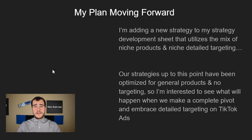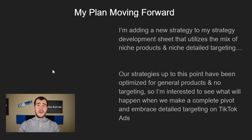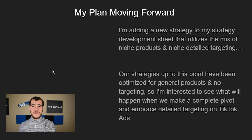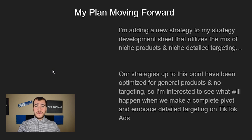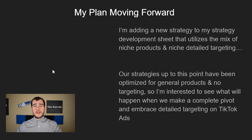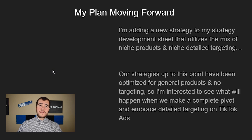I'm always testing new strategies and I always try to come on here and update you guys on the newest and best performing ones. I'm very interested to see what happens when we pivot our product research method around this. Up to this point we've been testing general products, and testing general products with specific niche targeting isn't going to be that different — which is probably why no targeting has worked so well. I'm excited to completely pivot our product research and targeting method, maybe switch some things up on the website, and run this as a proper test with 10 to 15 different products, different stores, and different ad accounts.